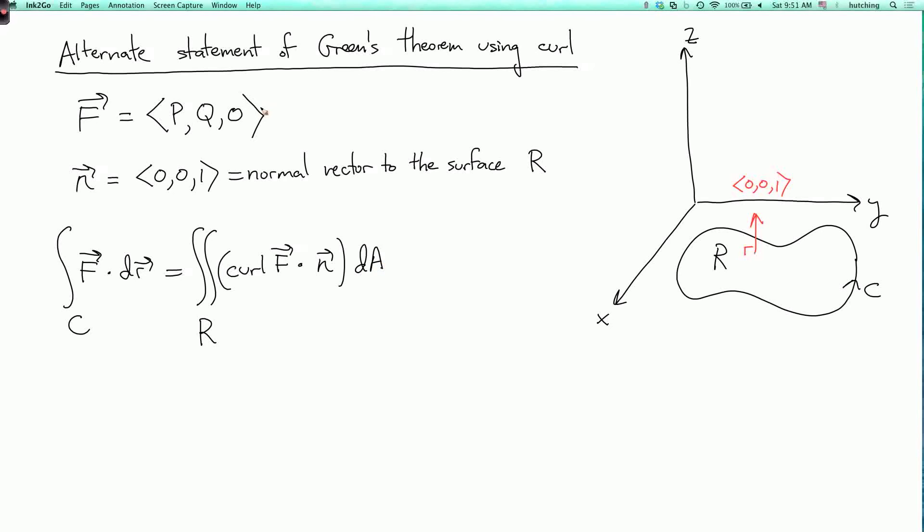Why is that? Well, the usual version of Green's Theorem has in the integrand dQ/dx minus dP/dy. So why is that the same thing as curl F dot n? Well, what's curl F dot n?